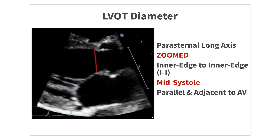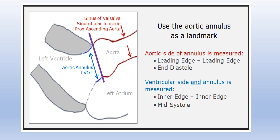The LVOT diameter is measured in the long axis view, in B-mode, from inner edge to inner edge, in mid-systole, and parallel to the aortic valve annulus. Here is an important tip: this is the aortic annulus. Everything towards the ventricular side is the LVOT diameter, and this is the site of LVOT diameter measurement.